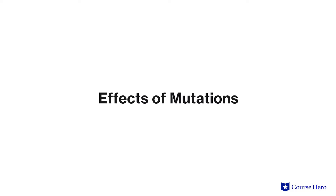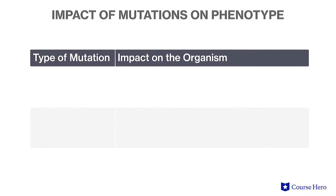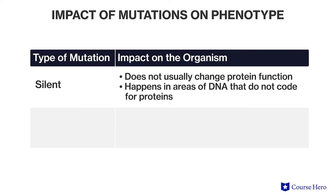We will be looking at both these types of mutations, but we'll start by classifying mutations based on the phenotypic effect they have on the organism. There are several ways in which mutations can affect an organism. For example, a silent mutation has no effect on protein function, either because it results in no change in the protein that is coded, or because it occurs in a non-coding region of DNA.